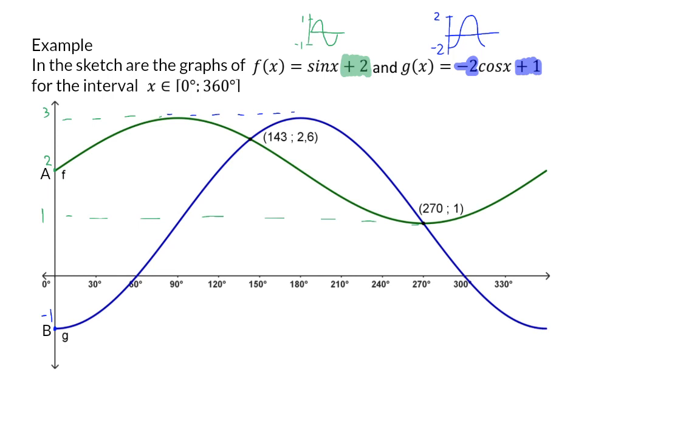On the sketch, we can see that graph G intersects the x-axis at 60 and 300 degrees, and we are given the two coordinates where the two graphs intersect.